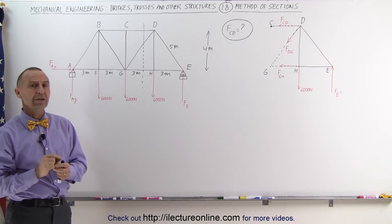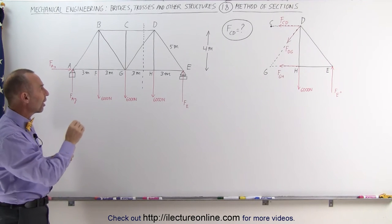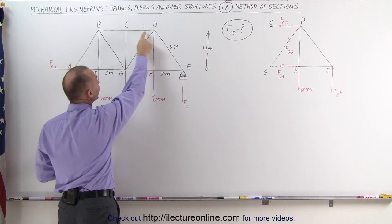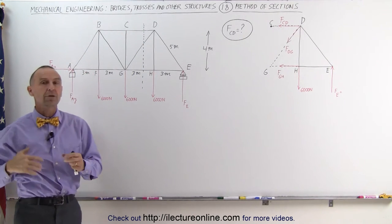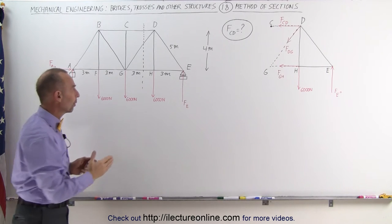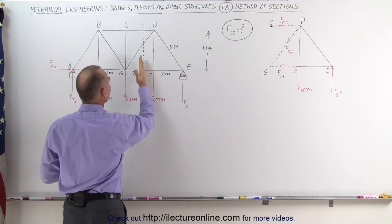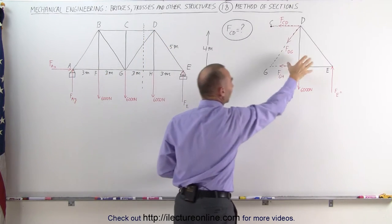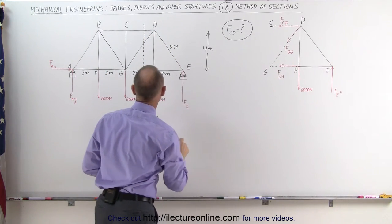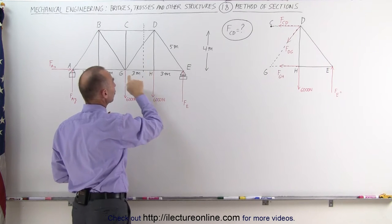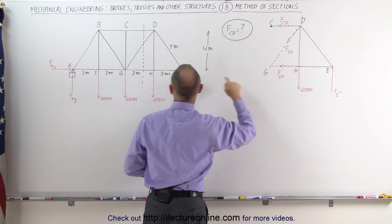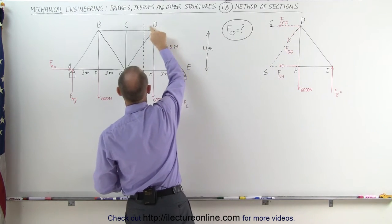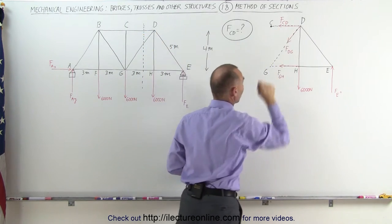But what we're going to do here is simply find the force on a single member. We're going to find the force on the member between C and D by using what we call the method of sections. So what we do here is we draw a dashed line through the bridge and we're going to take this section right here and put it on the side. Notice that we realize there will be a force between H and G which we indicate there, a force between D and G which we indicate there, and a force between D and C which we indicate there. That's what we're trying to find.